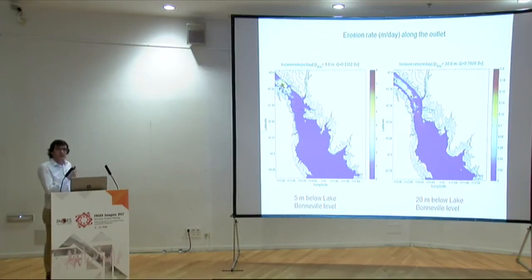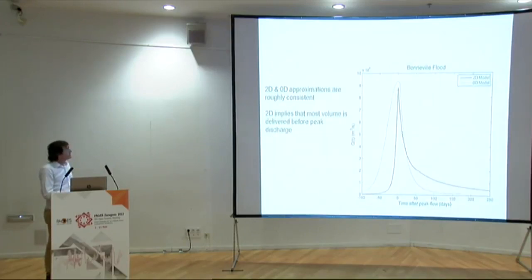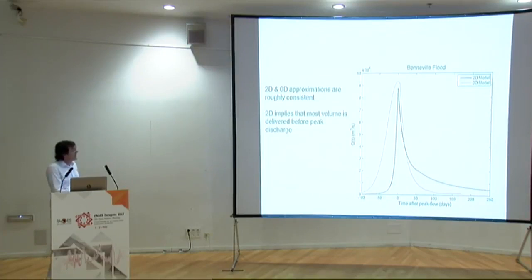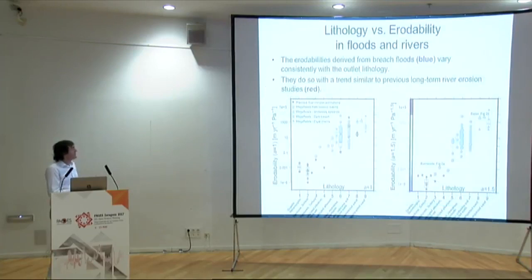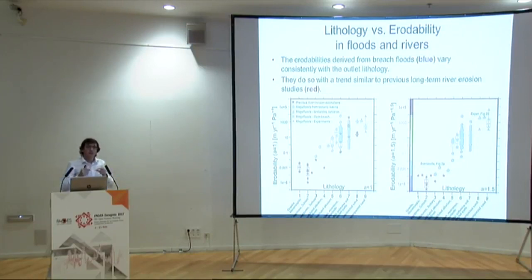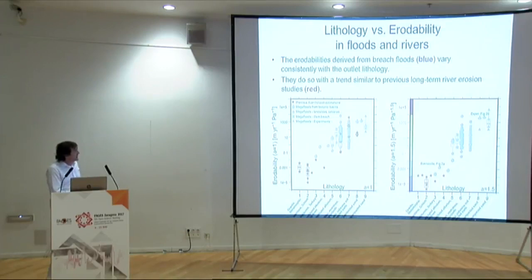One nice thing we learned from these complex 2D models is that we can do pretty much the same with a much simpler 0D model focused on the outlet of the lakes, and the results don't change too much. The peak discharges of 1 million cubic meters per second are still met using the same erosion parameters. So we took the database I showed at the beginning and for each of the outburst floods from overtopping lakes, we estimated the required erodibility needed to reproduce the observed peak discharge. This is the result.